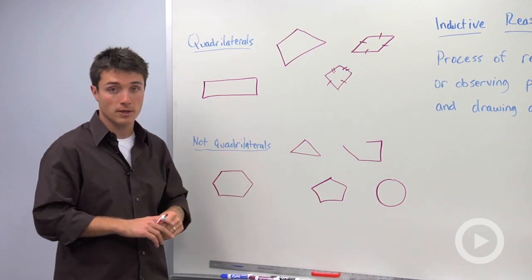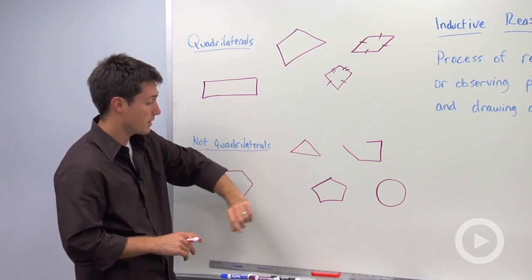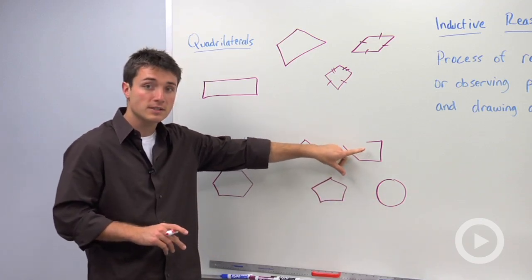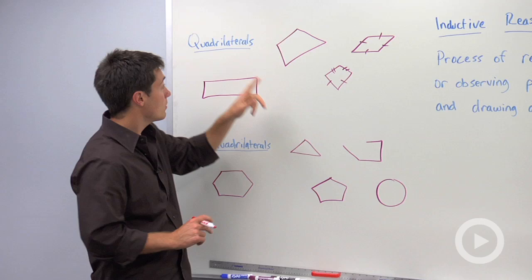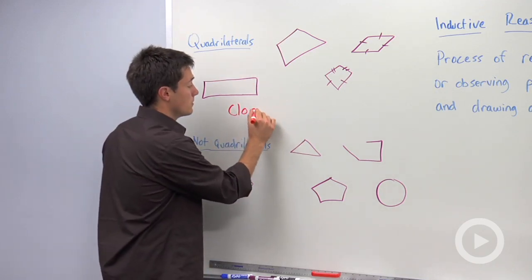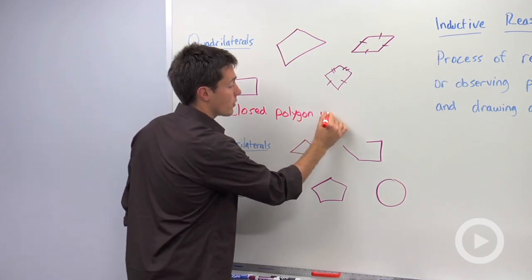If I look at non-quadrilaterals, I see that I have a six-sided figure, a three-sided figure, a five-sided figure, a circle, and a four-sided figure that's left open. So what I'm going to conclude is that a quadrilateral is a closed polygon with four sides.